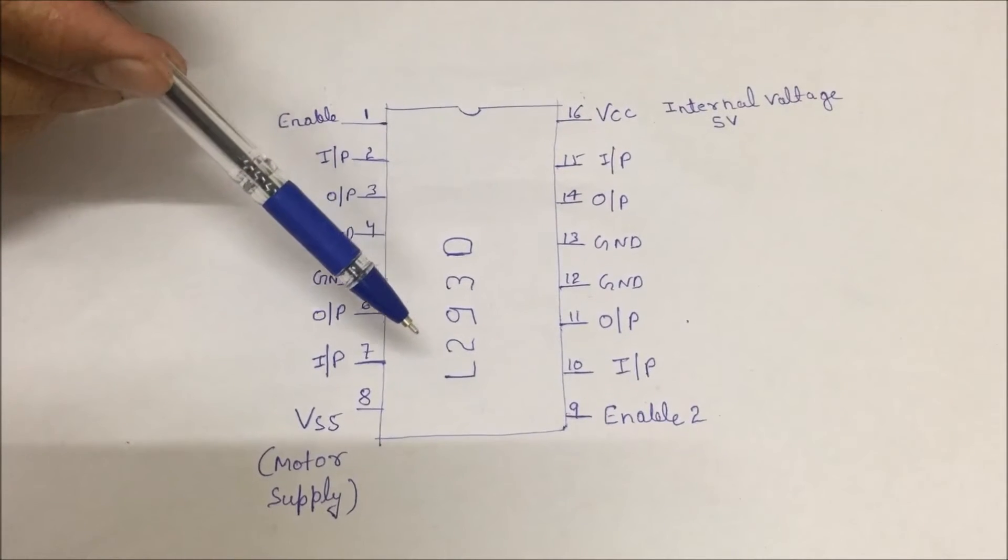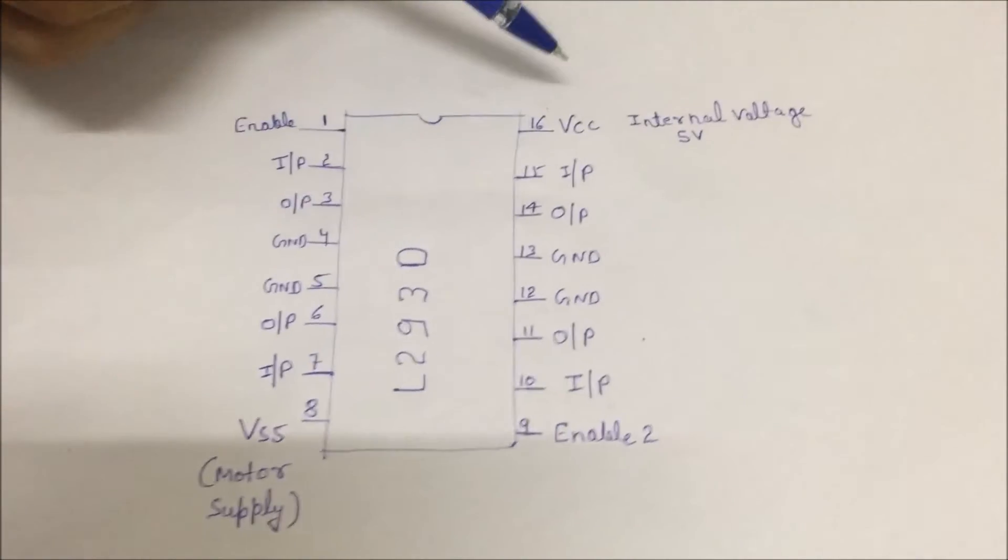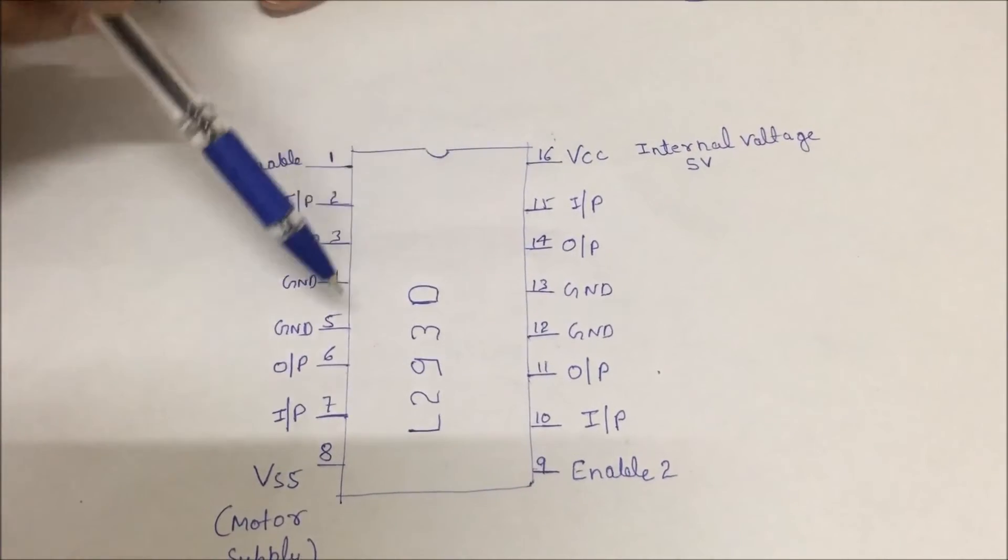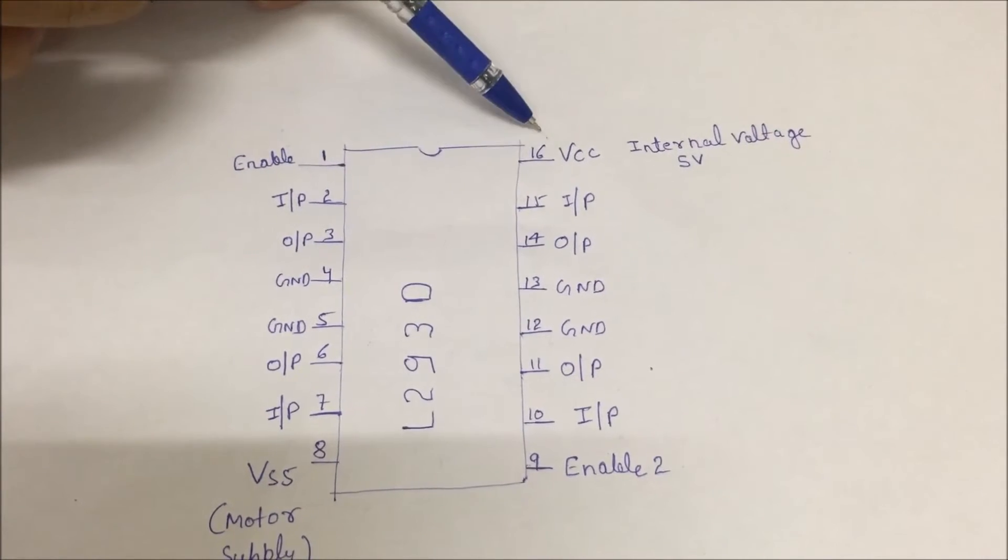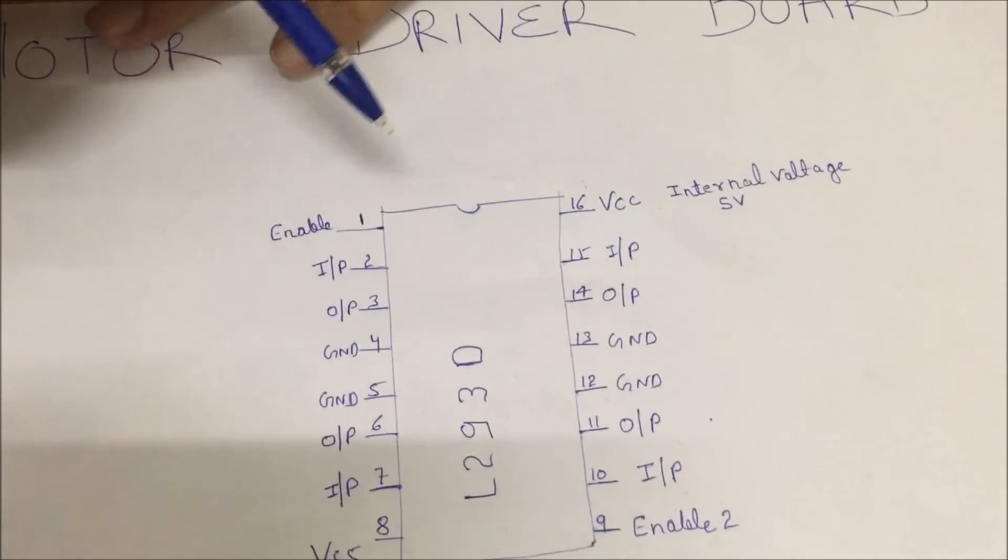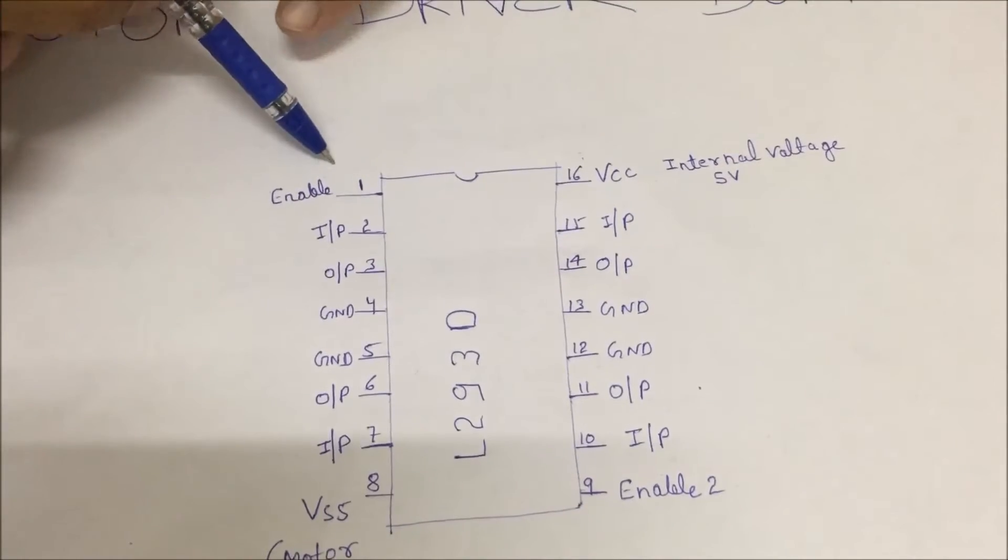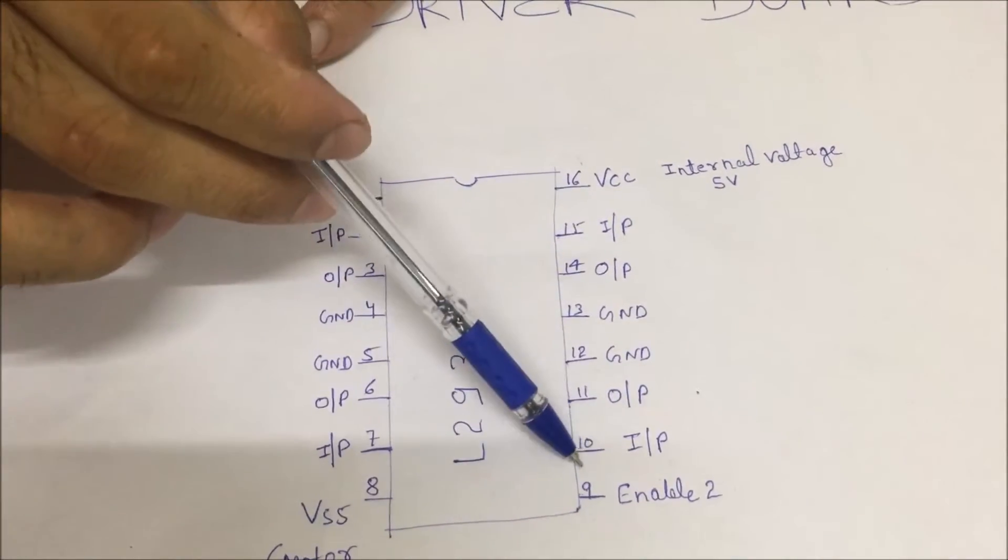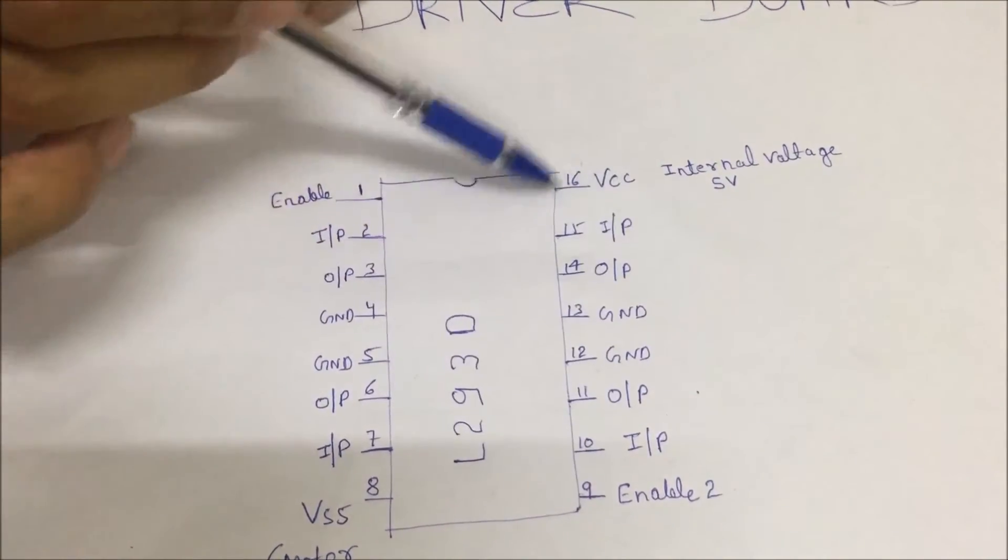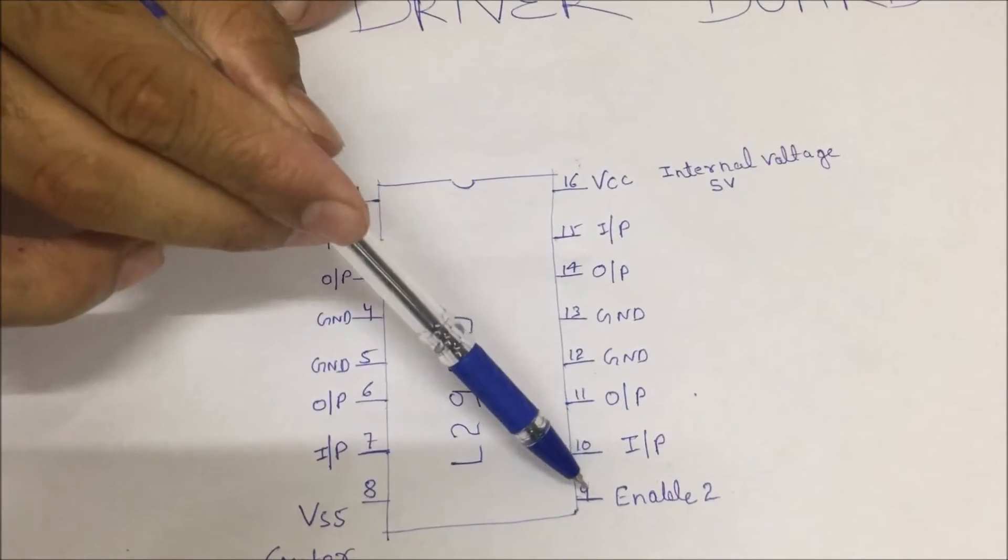Now I am going to tell you about the pin description of L293D. Pin number 16 is used to enable the whole IC, and generally we give here 5V. Pin number 1 is used to enable this side of IC, give 5V. Pin number 9 is used to enable this side of IC, and here also give 5V.